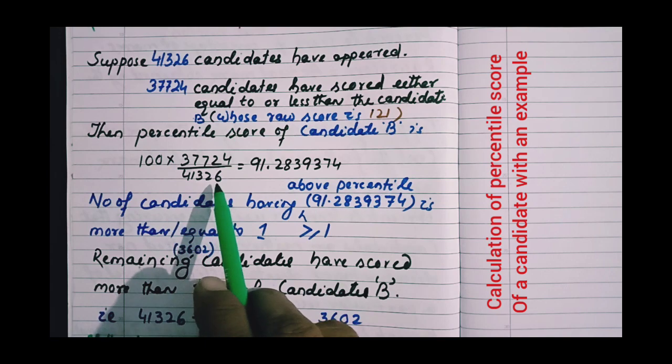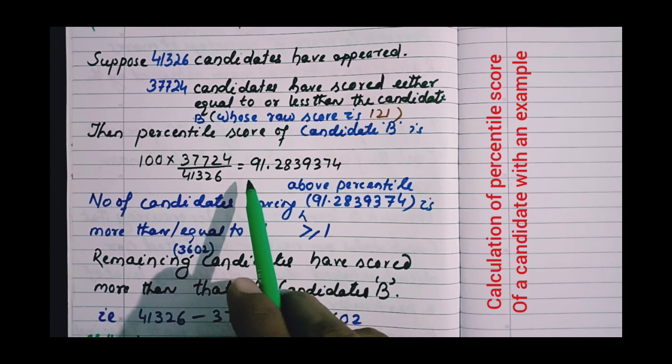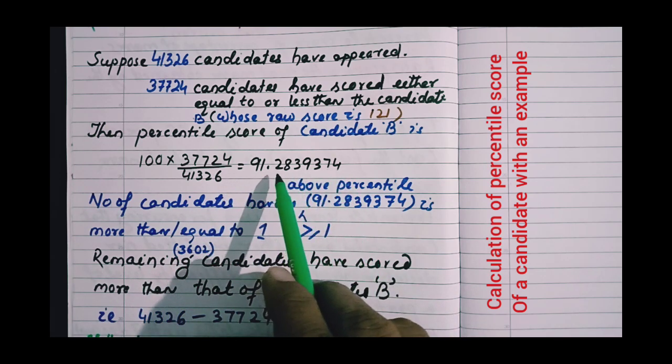41,326 candidates have appeared in that session. Then the percentile is found to be 91.2839374 up to 7 decimal places.